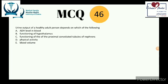Question 46: urine output of a healthy adult depends on which factors? Osmoregulation ensures blood plasma volume and dissolved substance concentration remain constant, achieved by controlling water and salt balance in the body. Urine production is the main method of maintaining osmolarity of blood plasma and tissue fluid.